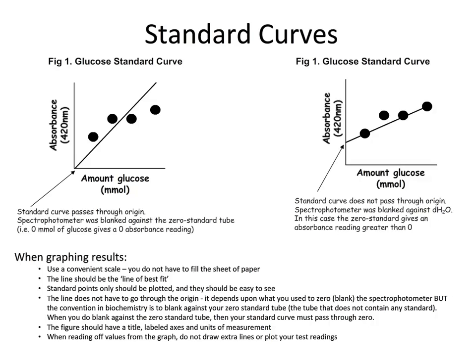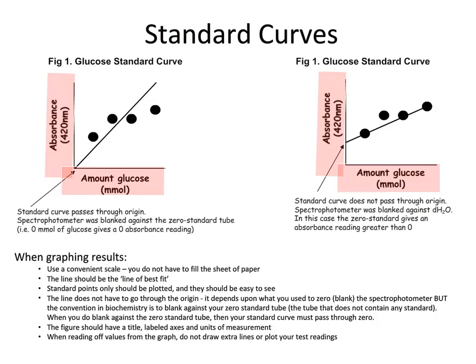When you graph your results, it is ideal to use a convenient scale so you do not have to fill the whole sheet of paper. For a standard curve, you should always draw a line of best fit — do not simply join the dots. Standard points only should be plotted and they should be easy to see. The line does not have to go through the origin; it depends on what you use to zero the spectrophotometer. The convention in biochemistry is to blank against your zero standard tube — the tube that does not contain any standard. When you do blank against the zero standard tube, then your standard curve must pass through the origin. All figures should have a title, all axes should be labelled, and the units of measurement provided. When reading off values from the graph, there is no need to draw extra lines or plot your test readings — it just makes things messy.